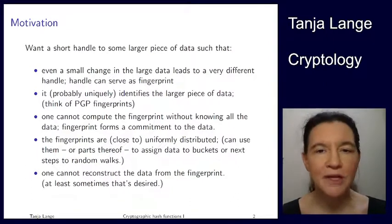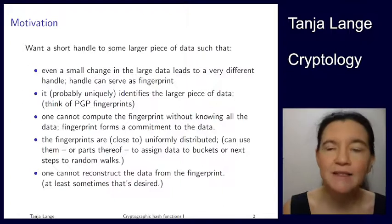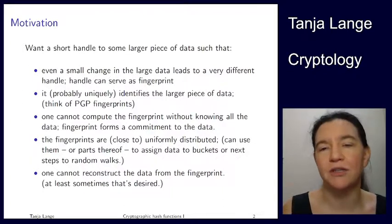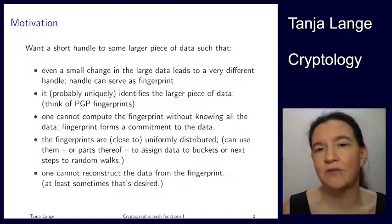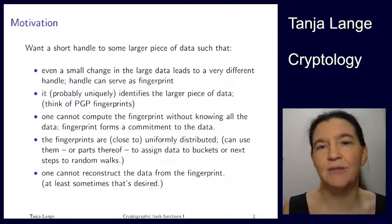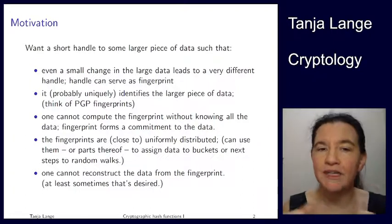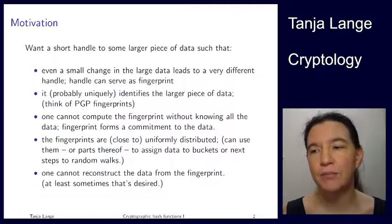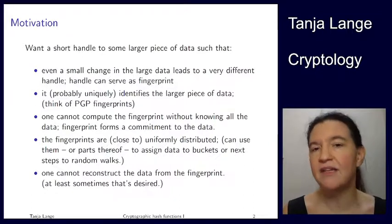You might be taking two pictures which are very similar — like portraits where you're smiling a little more or a little less, or a scene in nature that doesn't change that much. But you do want to distinguish those pictures, because afterwards you want to go and pick the nicest of the 10 moonshine pictures. So you want a small change in your data to lead to a very different handle — a different fingerprint — so you can easily disambiguate and figure out whether you have this unique file.